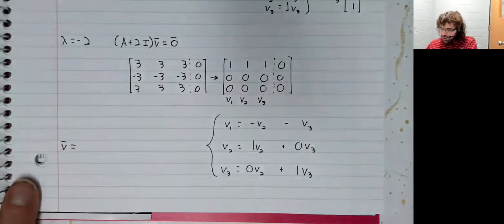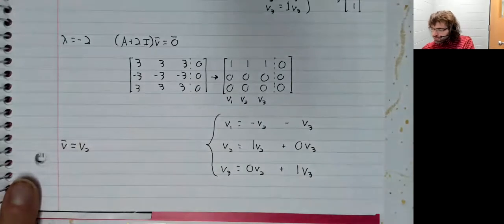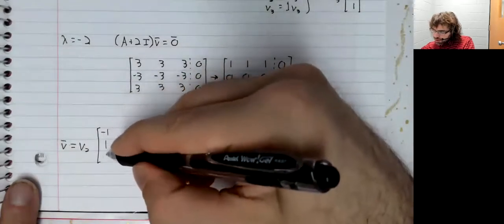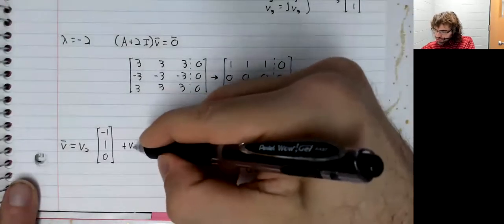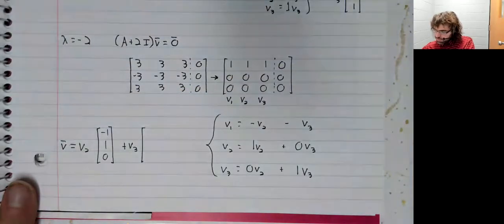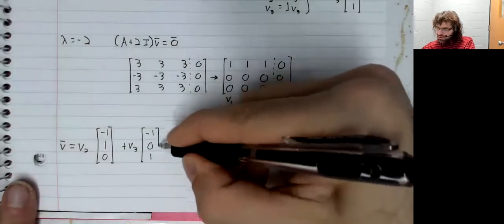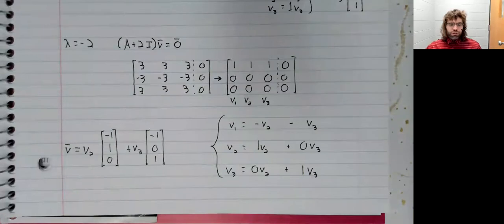And from this we find that V, the eigenvectors, are V2 times this vector plus V3 times this vector. And aside from letting V2 and V3 both be zero, any values of V2 and V3 give you eigenvectors.